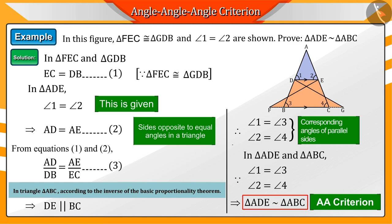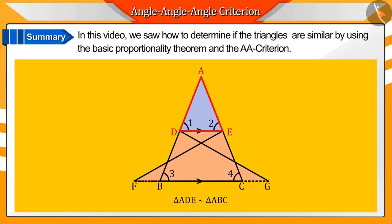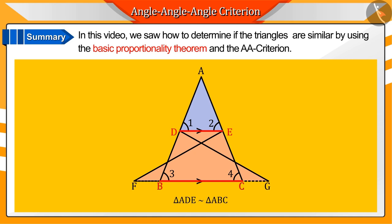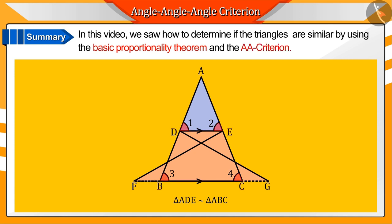This is what we had to prove. In this video, we saw how to determine if triangles are similar by using the basic proportionality theorem and the AA criteria. I hope that you have understood the AA criteria well.